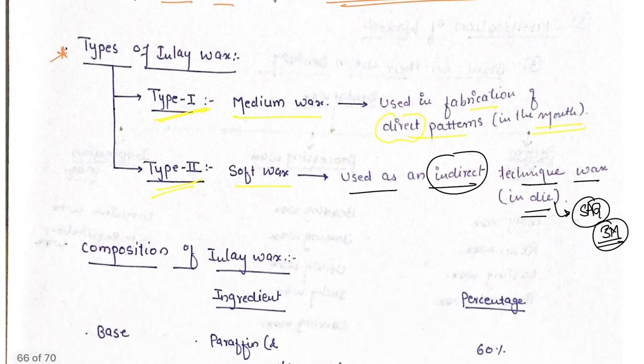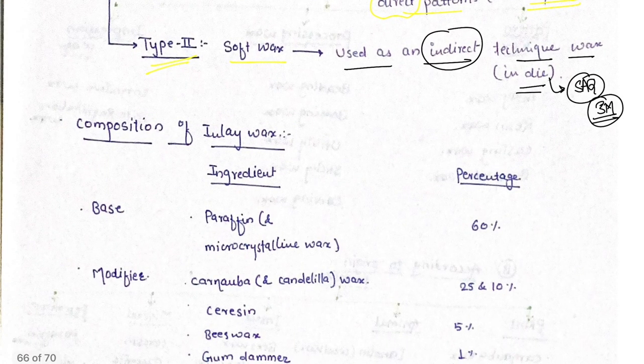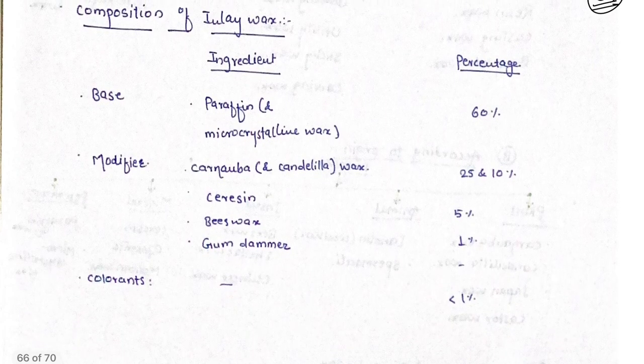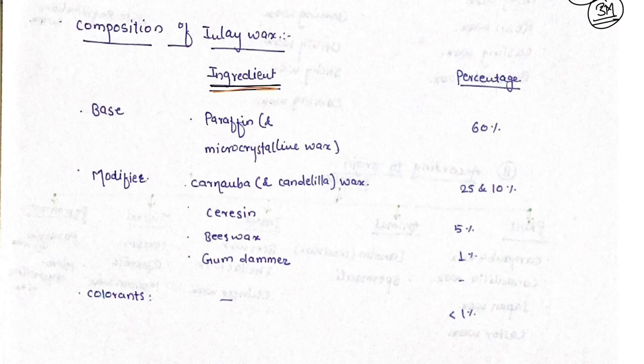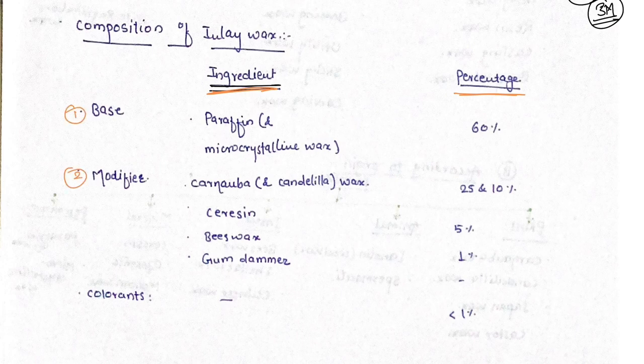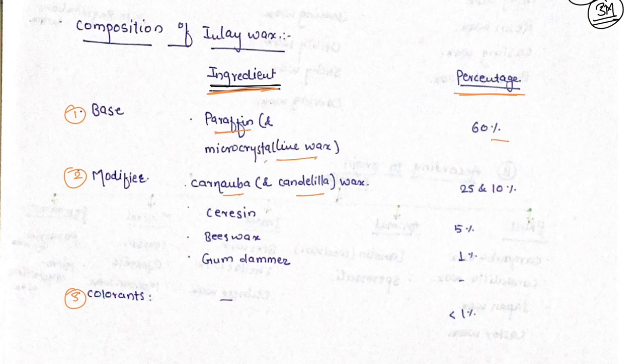The composition of inlay wax is divided into two parts. First we see the ingredients and components. The ingredients include base, modifier, and colorant. The base includes paraffin and microcrystalline wax 60%, carnauba and candelilla, sericin, beeswax, gum dammer, and colorant less than 1%.